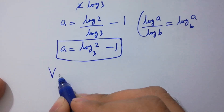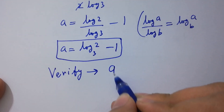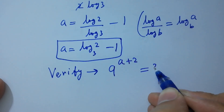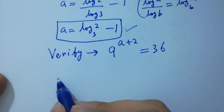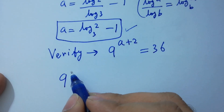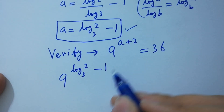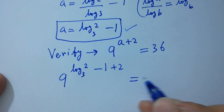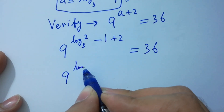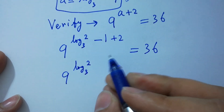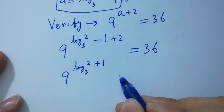In the next step, verify that 9 to the power a plus 2 equals 36 satisfies the equation. Here a equals log 2 to the base 3 minus 1, so a plus 2 equals log 2 to the base 3 minus 1 plus 2, which is log 2 to the base 3 plus 1. We need to confirm this equals 36.